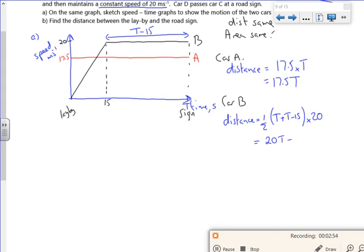So I've got 20T minus 150. So the distances are the same, because it's when we're passing each other.